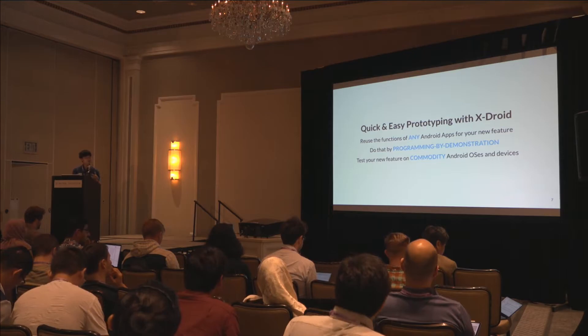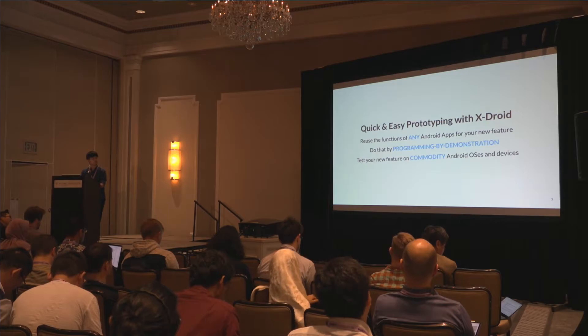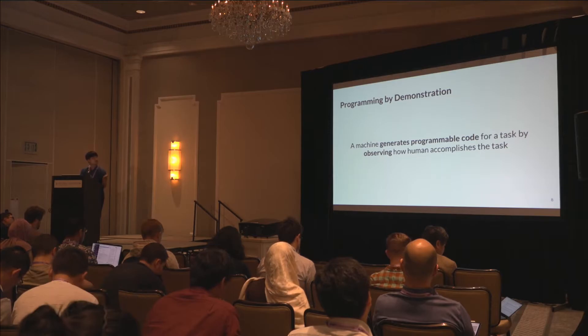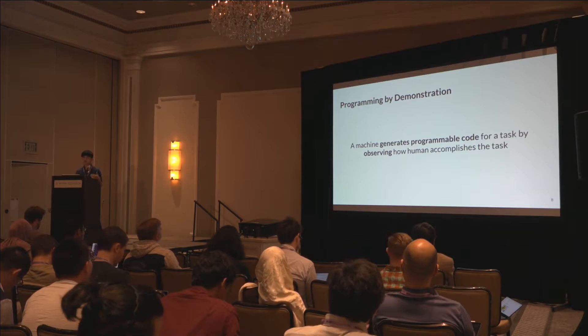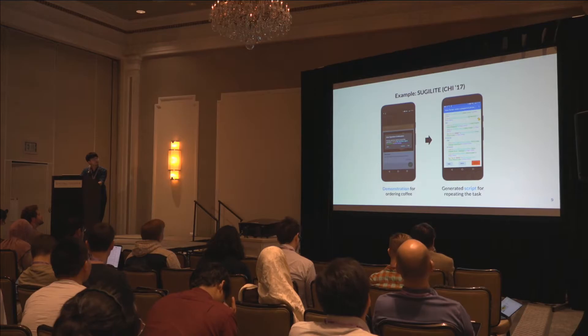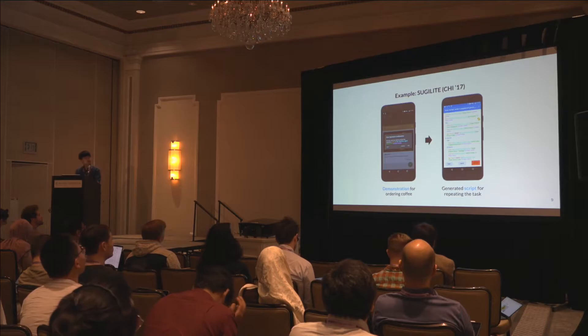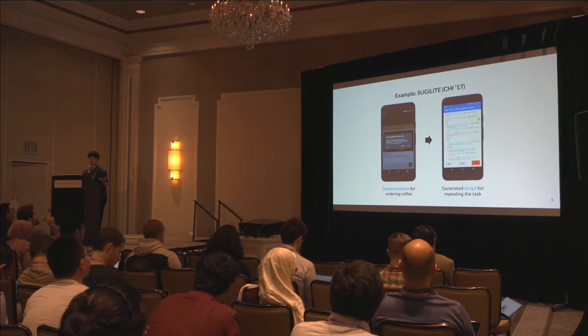CrossDroid also allows developers to test their new prototypes on commodity Android operating systems and devices. Before jumping into CrossDroid, let me briefly explain programming by demonstration. When we program, we usually sit in front of a computer and write code by hand. Programming by demonstration is a concept that enables machines to generate programmable code by observing how humans accomplish a task. For example, Sugilite, presented at CHI 2017, allows smartphone users to teach their smartphone functions to the system. If you want to teach how to order a coffee, you demonstrate the process through the Starbucks app, and Sugilite records your UI actions into a replayable script for later use.